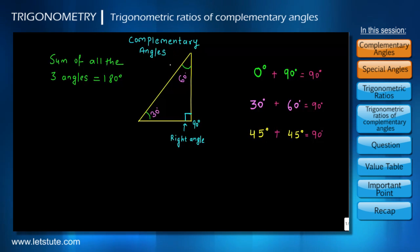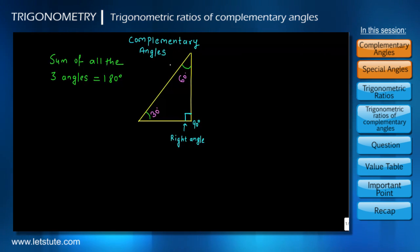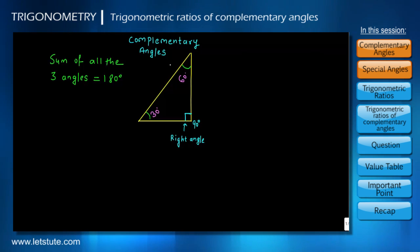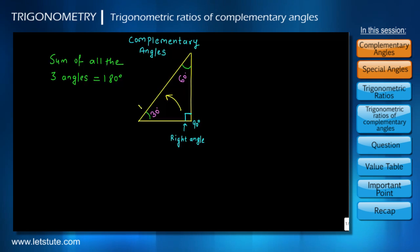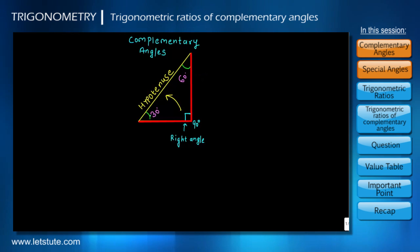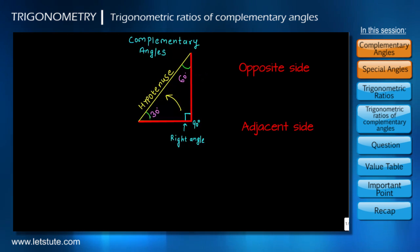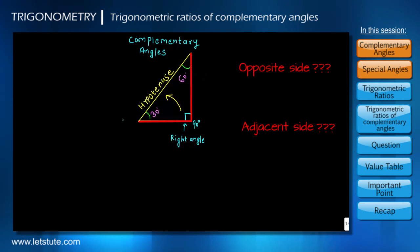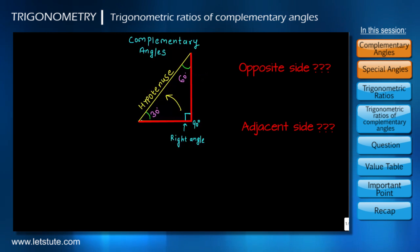Now if we talk about the sides, we know that the longest side in a right angle triangle, which is opposite to the 90 degrees angle, is always known as the hypotenuse. The other two sides are defined as the opposite side and the adjacent side. But which side is opposite and which is adjacent depends on from which angle you look at it.